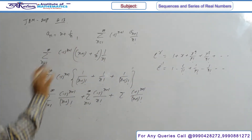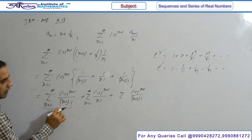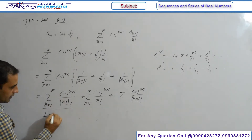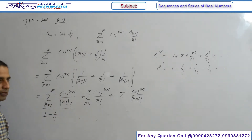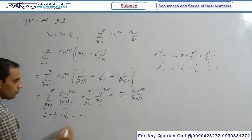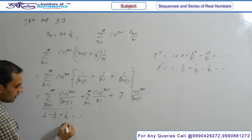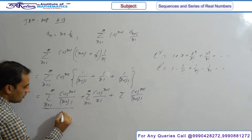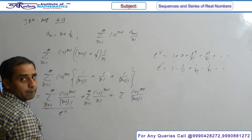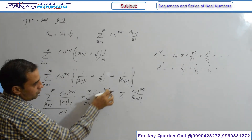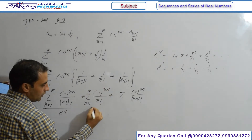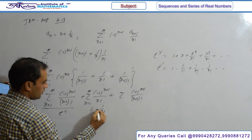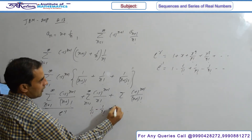Now compare each summation with the known series. Expanding the first summation from n=1: at n=1 the value is 1, at n=2 it is -1/1!, then +1/2! and so on. This series represents e^(-1). For the second summation at n=1: value is 1/1! then -1/2! then +1/3! and so on.